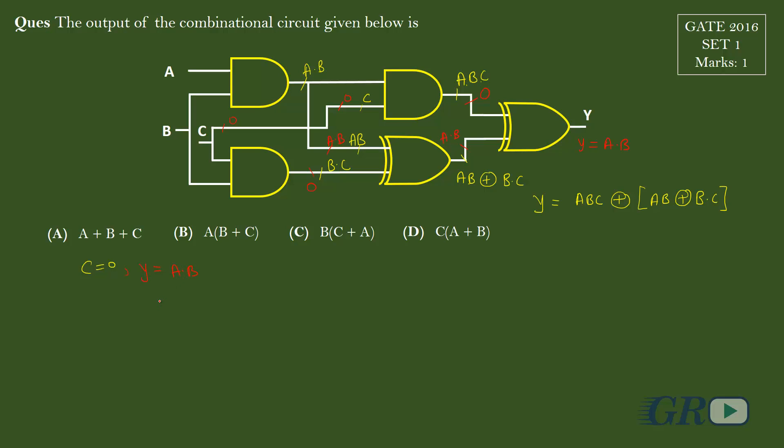Now if we check the given options, suppose I put C equals to zero, here I am getting A plus B, here A dot B, here AB, here also AB, here I am getting zero. So B and C are my probable solutions.